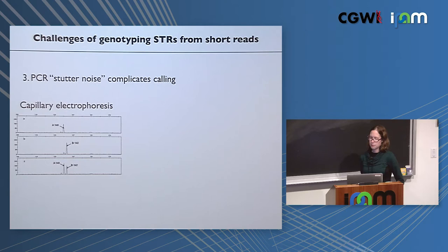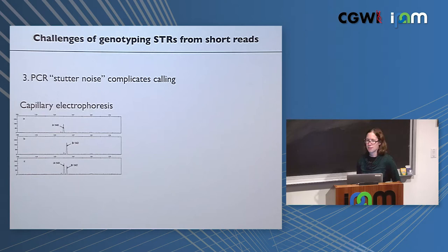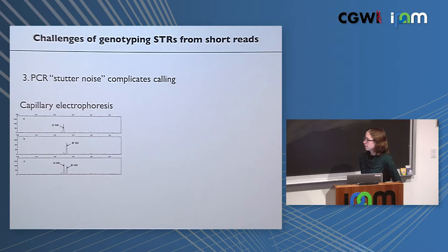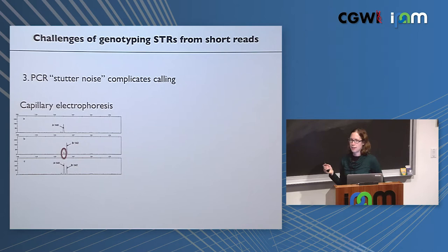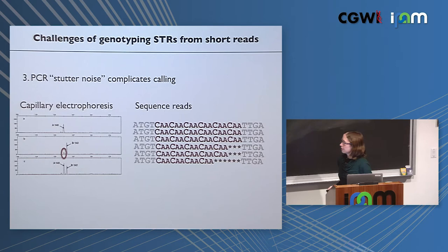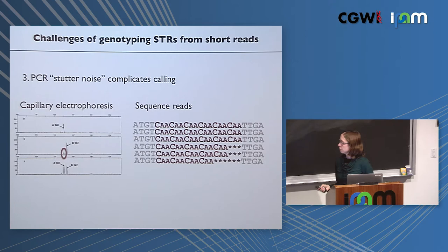Another issue is PCR stutter noise. In capillary electrophoresis, the pre-sequencing method of genotyping STRs, you PCR-amplify these regions and determine product size. You get peaks corresponding to the true alleles, but also small 'stutter peaks' corresponding to errors that usually happen during PCR amplification. In sequencing reads, a group of reads all from the same underlying allele can show little insertions or deletions to the actual allele due to this PCR-induced stutter noise.